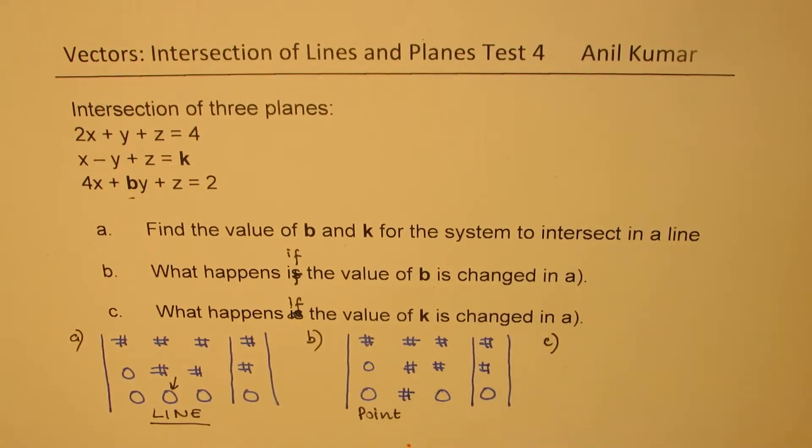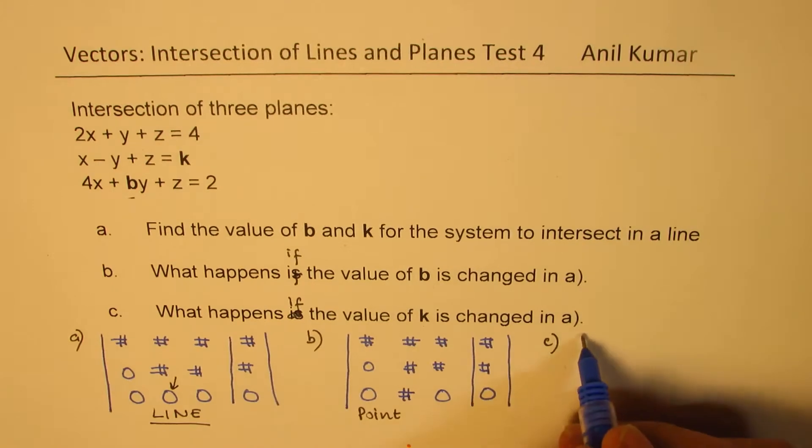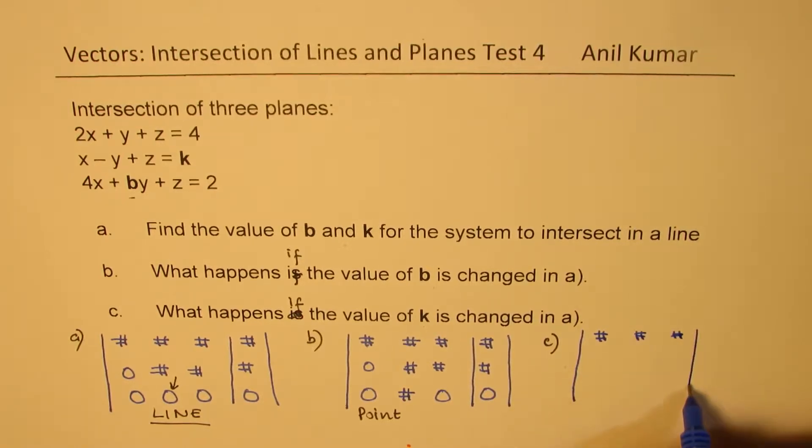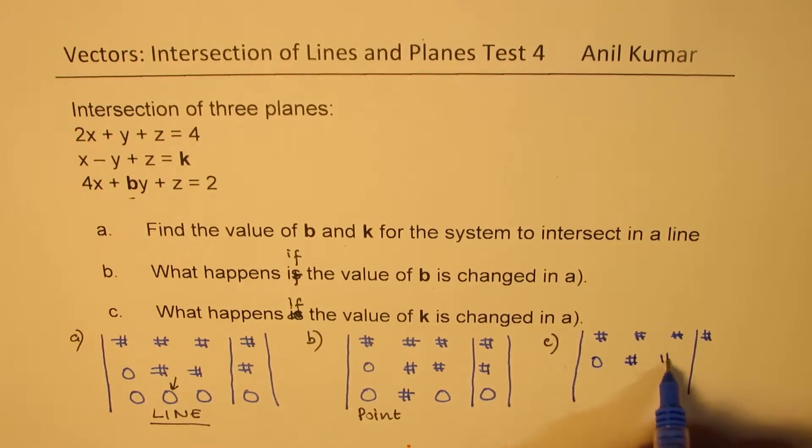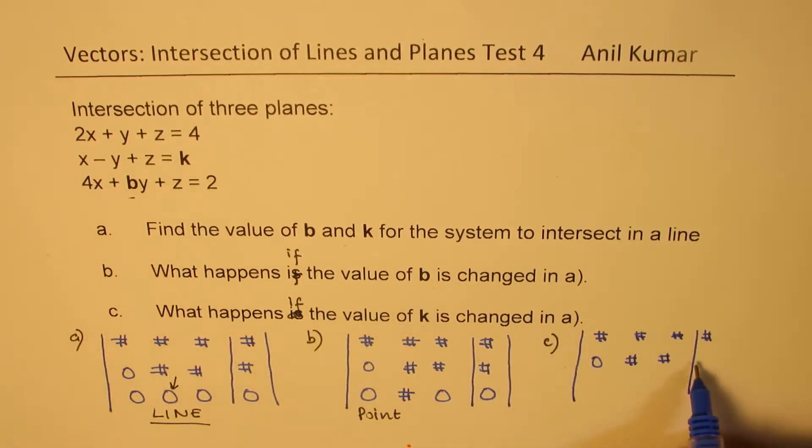And c is when we change the value of k. Then see what happens. So we'll have a situation which could be something like this. So we change the value of k. That means this value is something different. So basically, well, it will be some other point in that case.